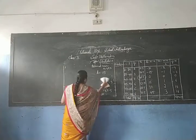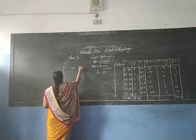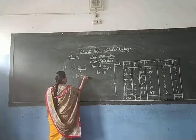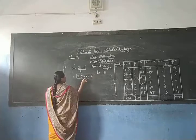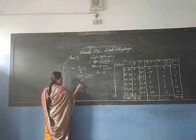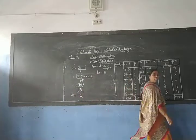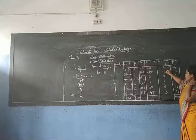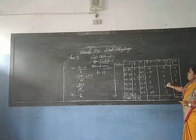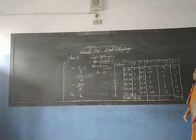Now let us calculate ui using the formula ui = (xi minus a) divided by h. For the first row: (17.5 minus 47.5) divided by 15 = minus 30 divided by 15 = minus 2. Similarly, the ui values for the remaining rows are: minus 1, 0, 1, 2, and 3.